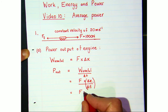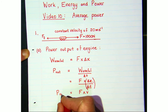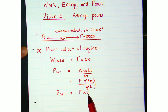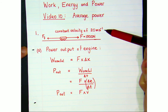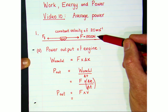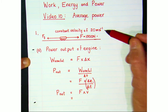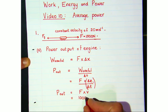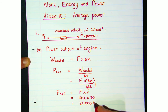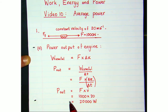We've derived an equation for the power output of the engine. It depends on the force the engine exerts forward and the average velocity of the vehicle. In our example the car travels at a constant velocity of 20 meters per second. If the forward force of the engine is 1,000 newtons and the vehicle is moving at 20 meters per second, then power equals 1,000 multiplied by 20, giving 20,000 watts.